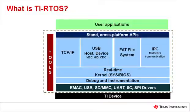So what is TI RTOS in a bit more detail? It really consists of two elements. On the left you can see there are some tools — these are graphical configuration tools and RTOS-aware debug tools. Then the rest of the diagram shows the actual embedded software components: at the bottom, the device drivers; then the multitasking kernel itself; and on top of that, middleware components including TCP/IP, USB, a FAT file system, and inter-processor communication software aimed at our multi-core Concerto family.